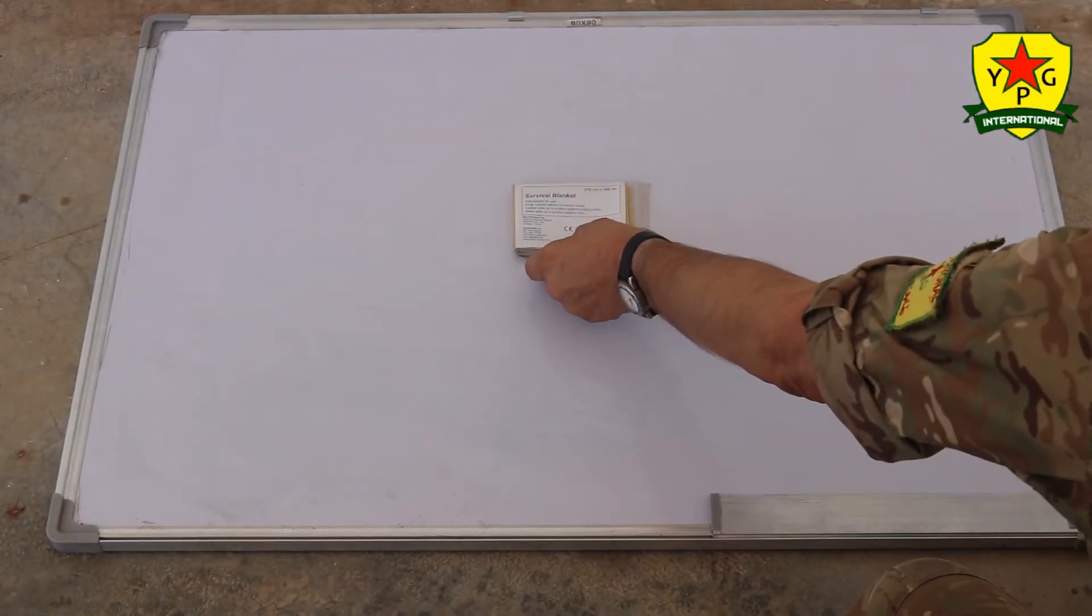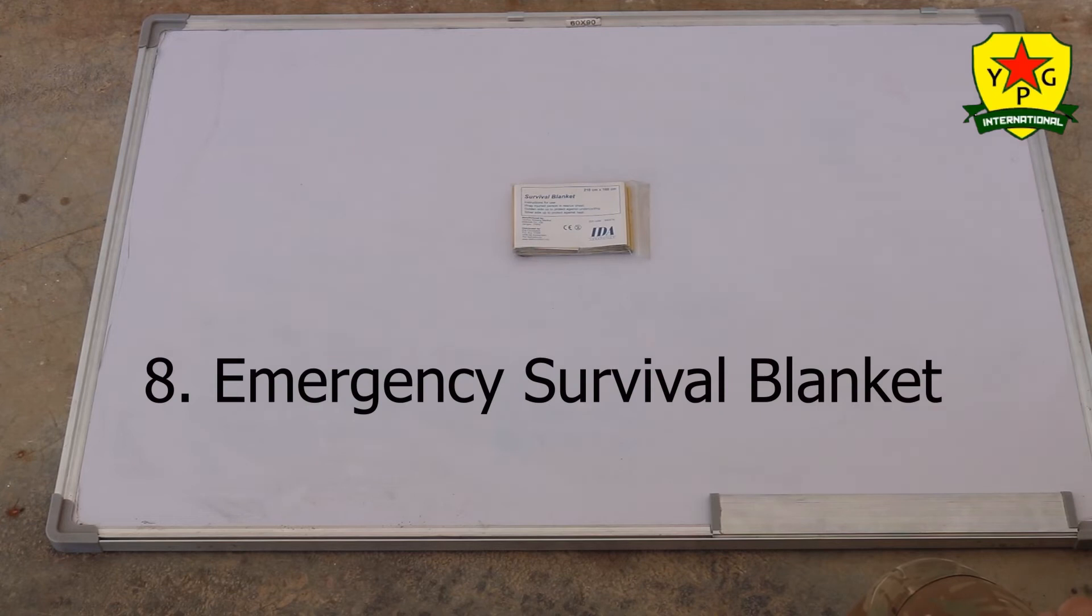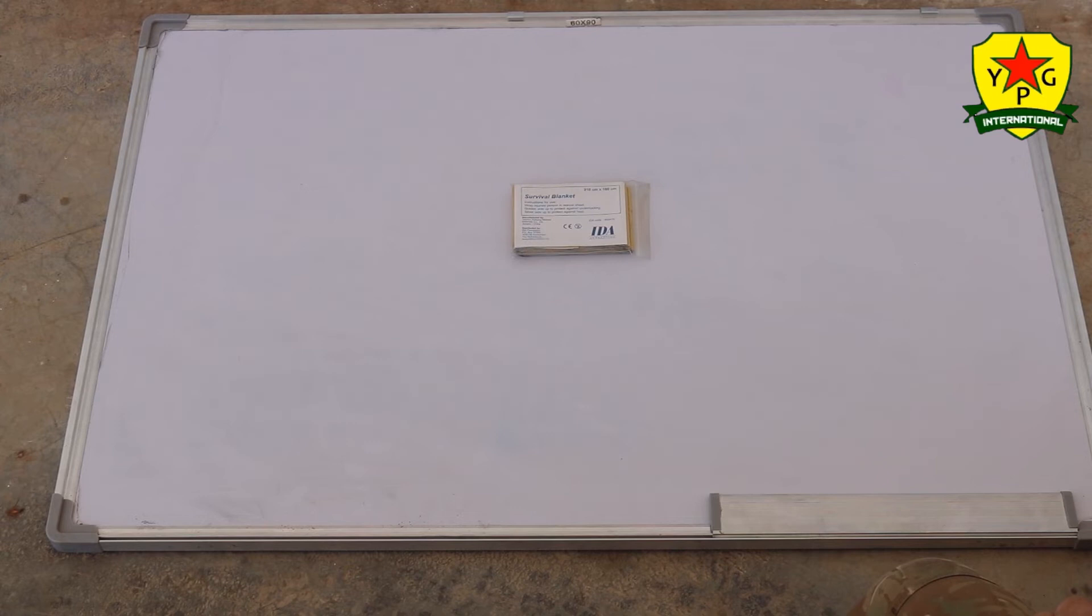And finally for your IFAK, the emergency survival blanket. If you can get a double sided one, which protects against both heat and cooling, this would be good.